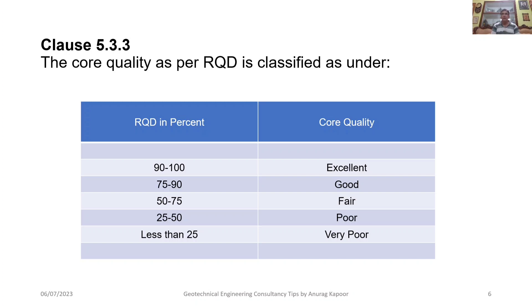As per Clause 5.3.3, the Rock Quality Designation RQD classification in percentage values is as follows: 90 to 100 percent is excellent quality rock; 75 to 90 percent is good quality rock; 50 to 75 percent is fair quality rock; 25 to 50 percent is poor quality rock; and less than 25 percent is very poor quality rock.